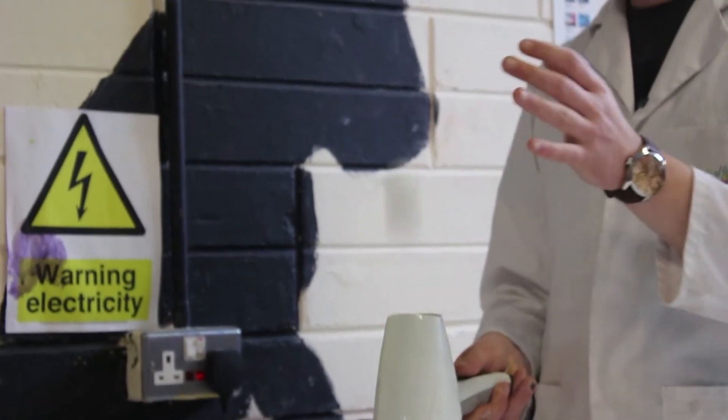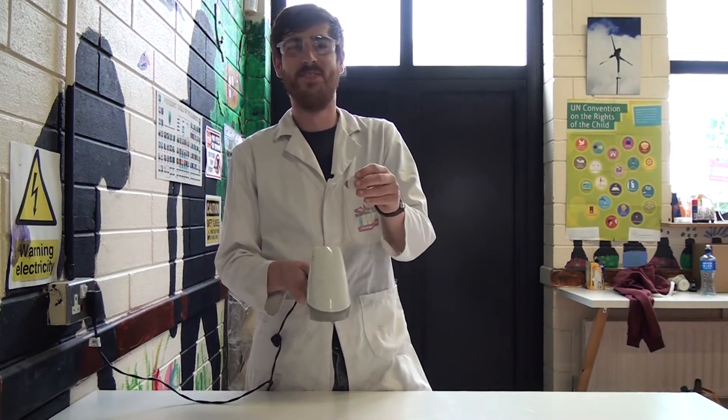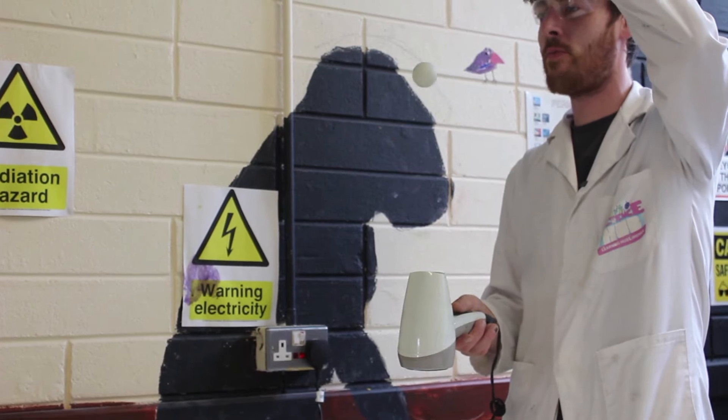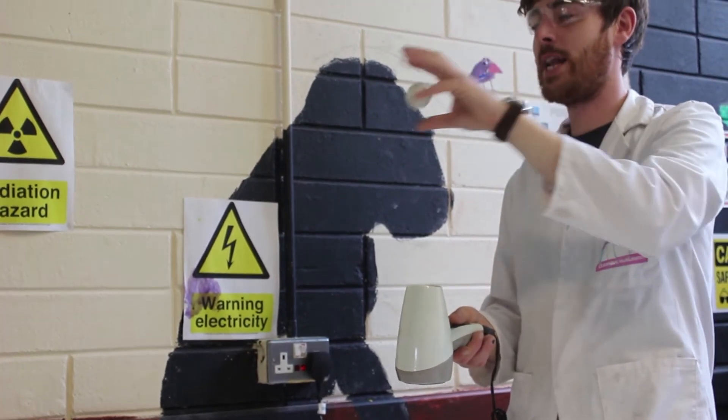So once it reaches this balance point, the force of gravity going down and the force of air coming off from the hairdryer are equal, so it's in a balance point here.